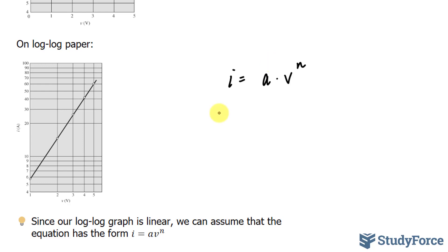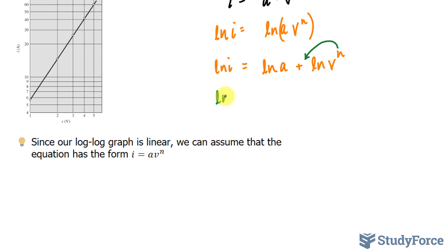Now, if I ln both sides, I end up with ln i is equal to ln a v to the power of n. This can be split up using the rules of logarithms, namely the product rule, as ln a plus ln v to the power of n. And using the power rule, this n can be placed in front of ln v. Giving us ln i is equal to ln a plus n times ln v.